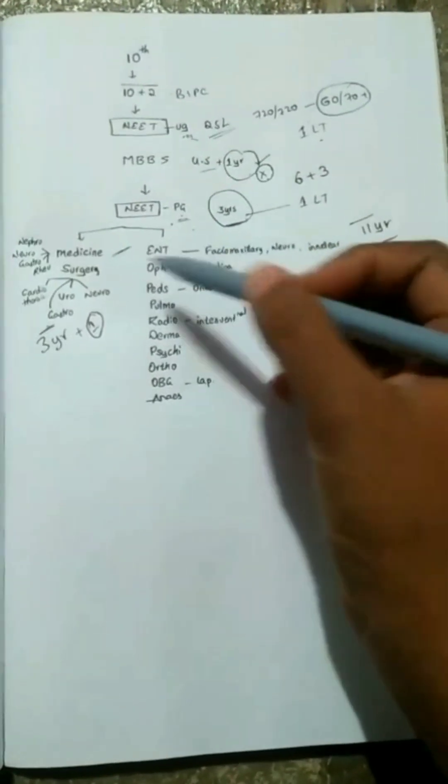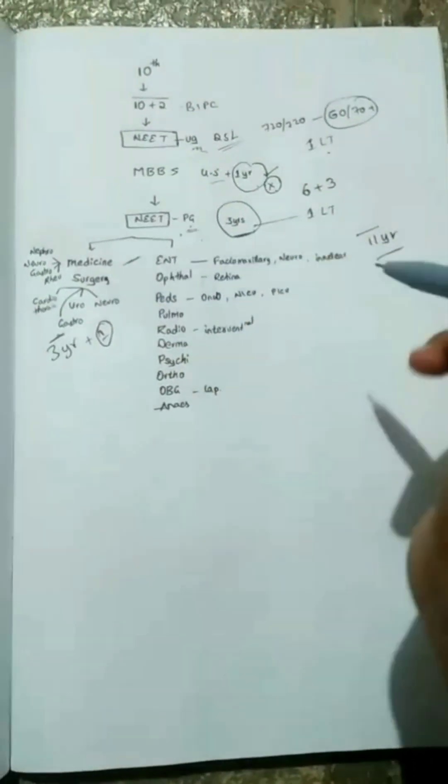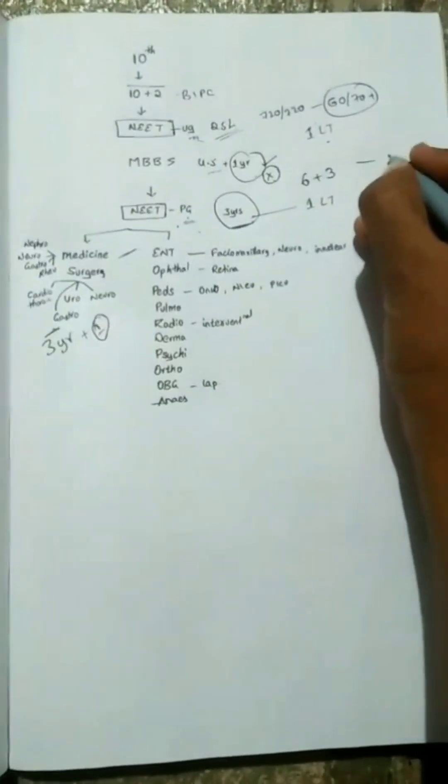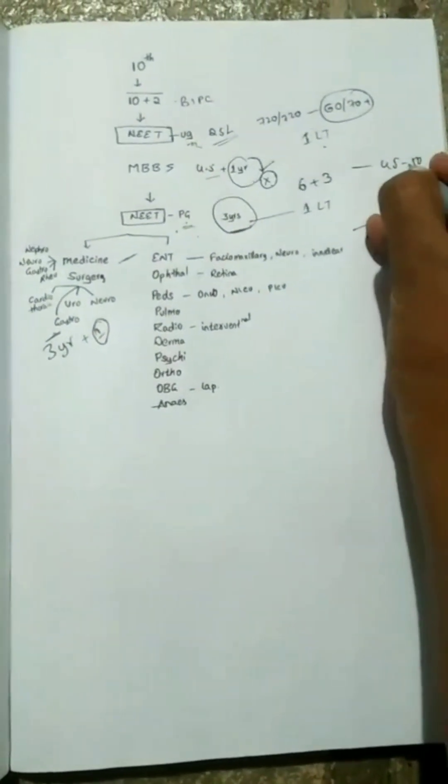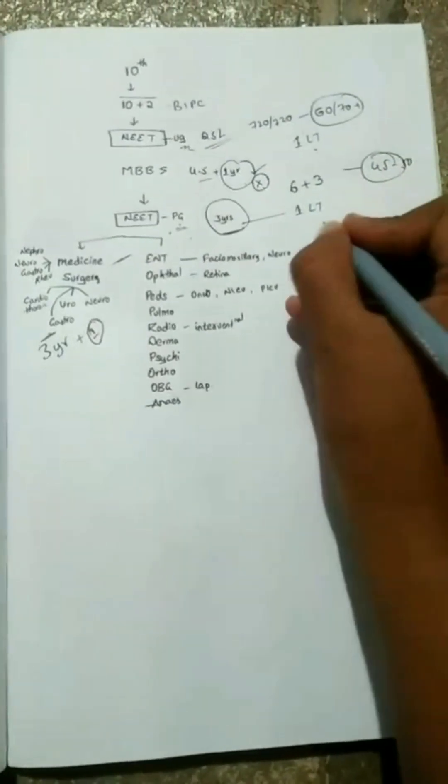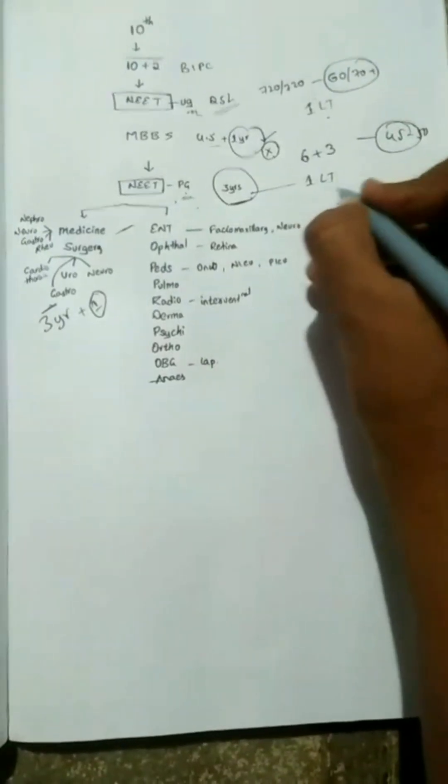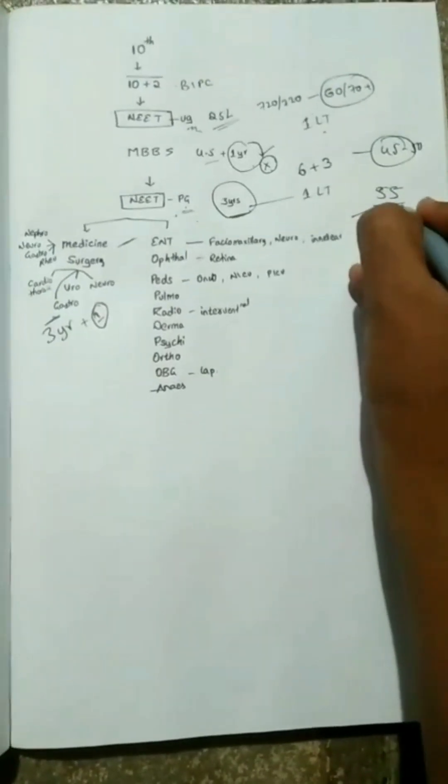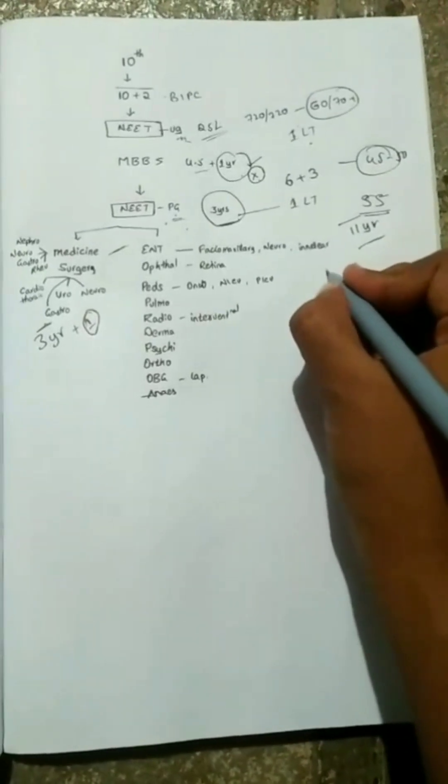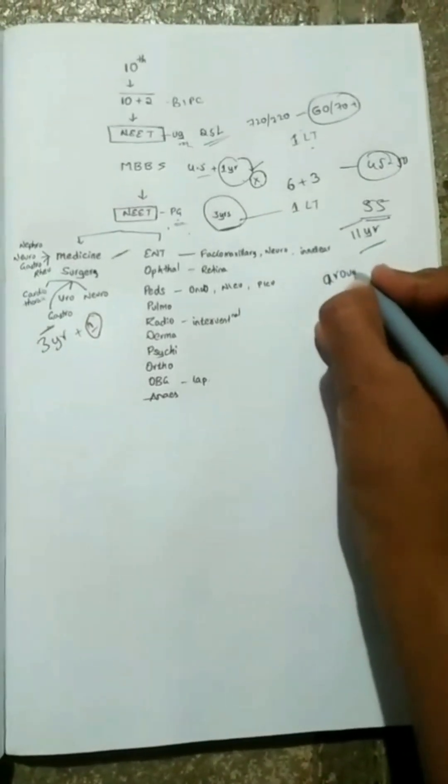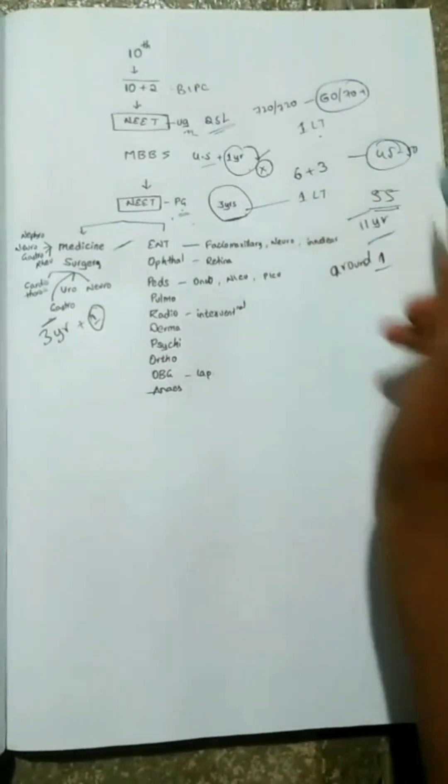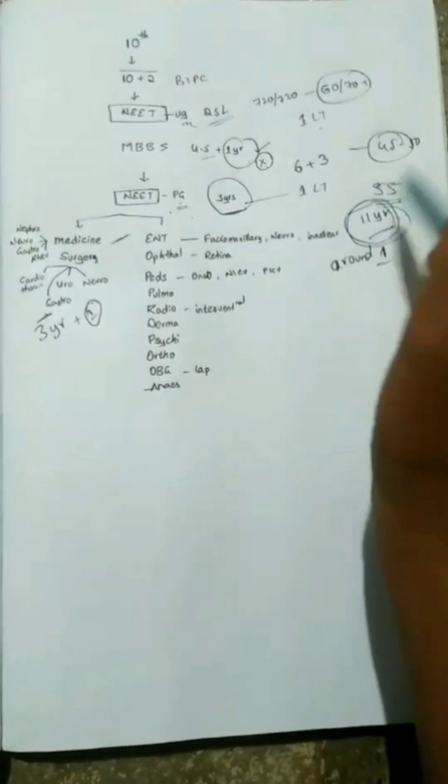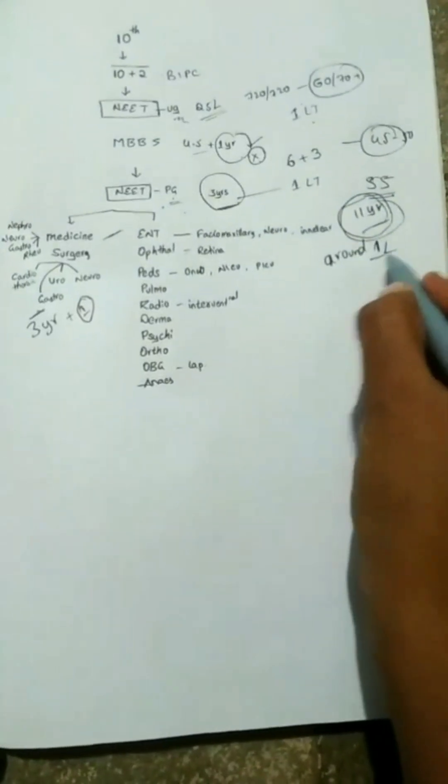ENT, ophthalmo, radio, you can start practicing even after doing PG, but medicine and surgery require super specialty. An MBBS graduate in Telangana gets around 45 to 50K, mostly 45, in government setup. For PG you will get around 50, 55K. After completion of 11 years you will get around 1 lakh.